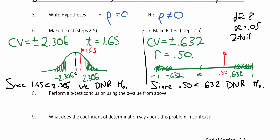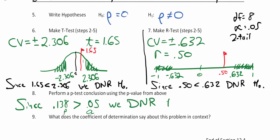For the p-test: our p-value was 0.138, or a 13.8% chance of getting this result. That is greater than alpha of 0.05. Since p is greater than alpha, we do not reject the null hypothesis. One, two, three — all three methods match. Our answers agree.